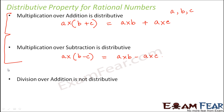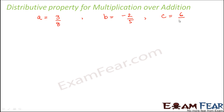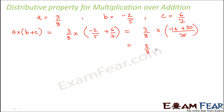Let us prove the distributive property of multiplication over addition. We take a = 3/8, b = −2/5, and c = 6/7. We first calculate a into (b plus c), which is 3/8 into (−2/5 + 6/7). This equals 3/8 into (−14 + 30)/35, which is 3/8 into −16/35.